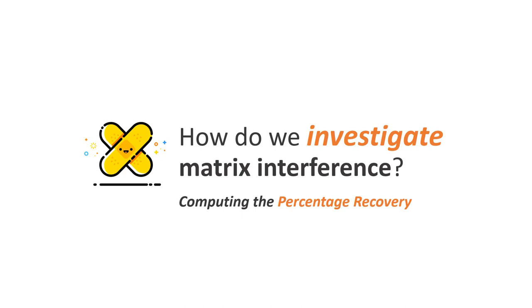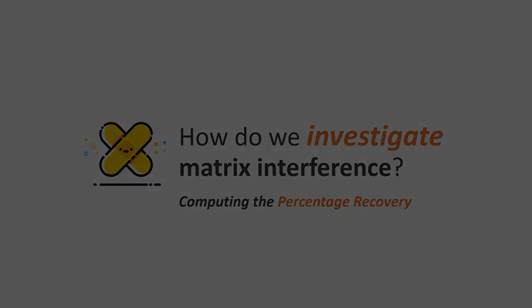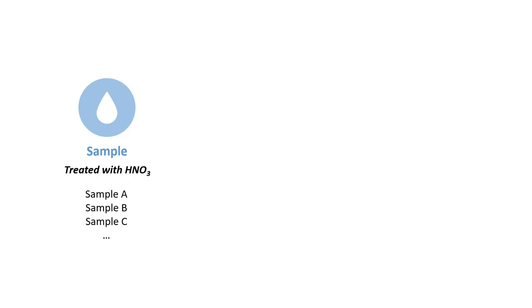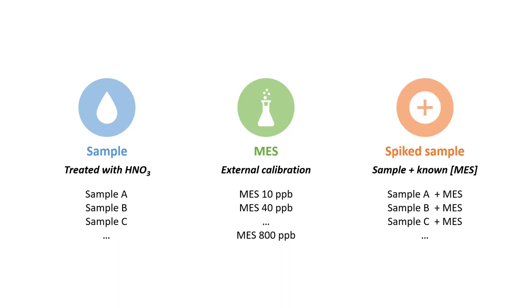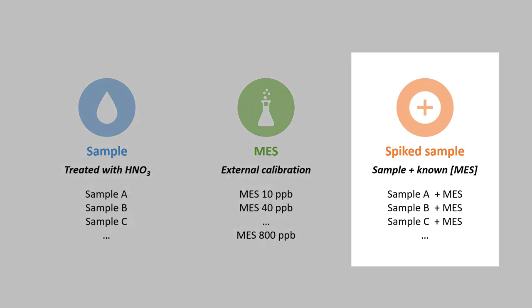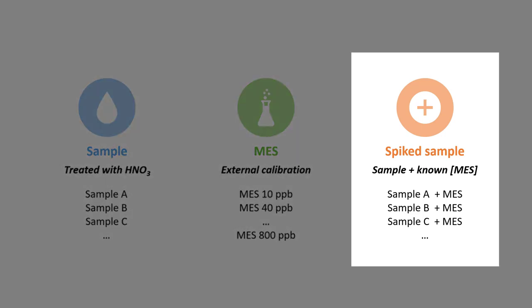So in the last part of this video, we're going to learn how to investigate the matrix interference by computing the percentage recovery. In the context of analytical chemistry, this is part of the method validation. Previously we were talking about how to preserve water samples by treating them with nitric acid, how to perform quantitative analysis by using external calibrations with multi-element standards.